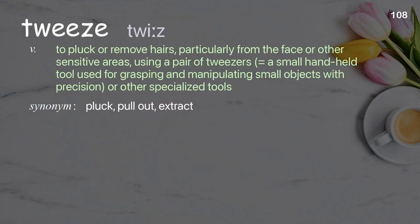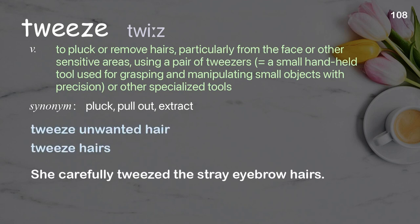Tweeze. To pluck or remove hairs, particularly from the face or other sensitive areas, using a pair of tweezers — a small handheld tool used for grasping and manipulating small objects with precision — or other specialized tools. Examples: tweeze unwanted hair, tweeze hairs. She carefully tweezed the stray eyebrow hairs.